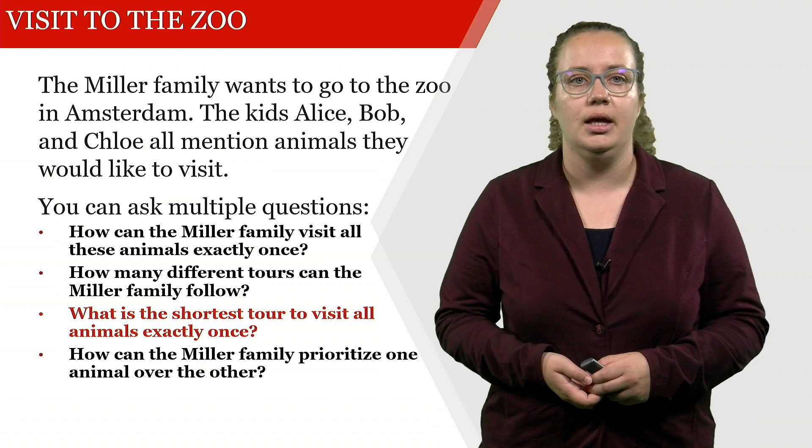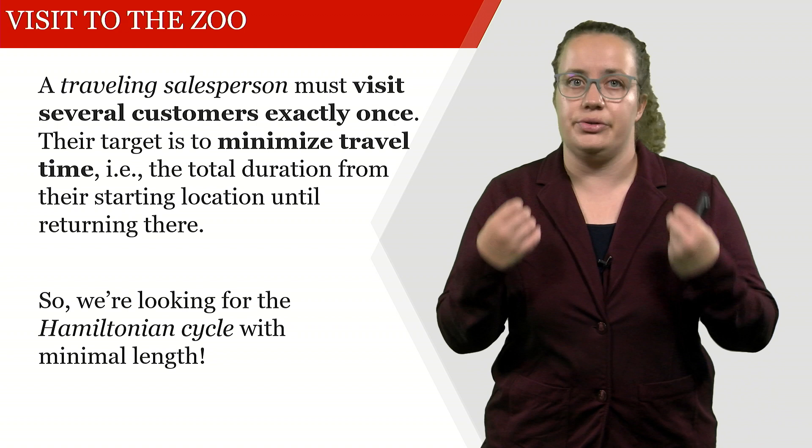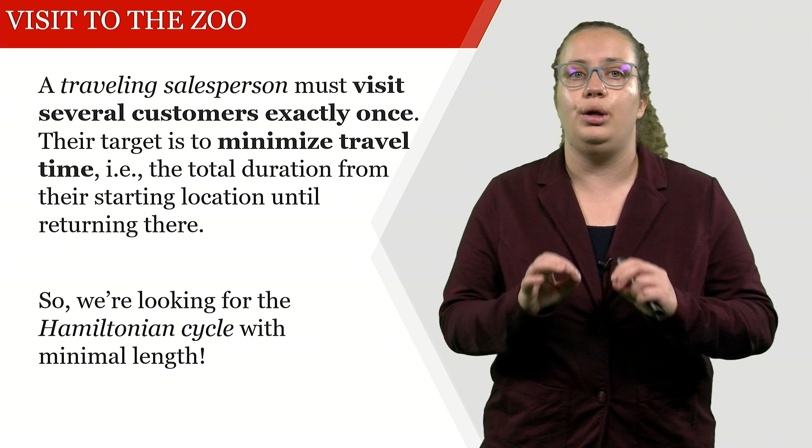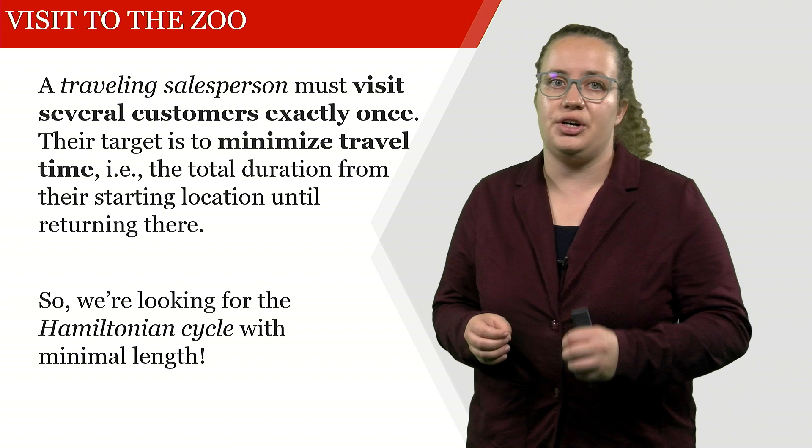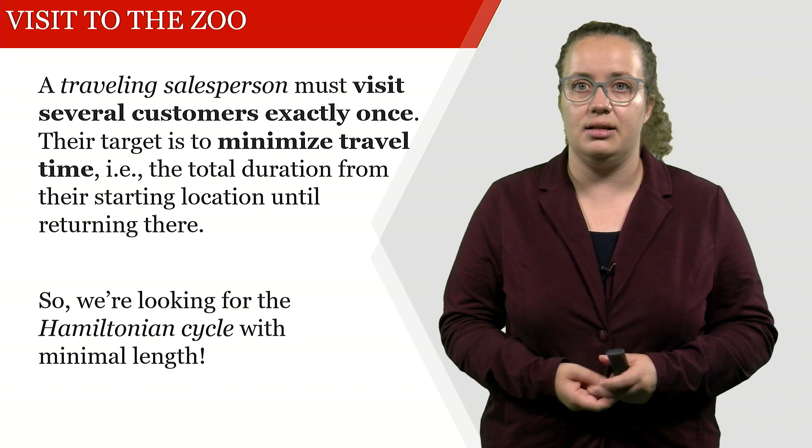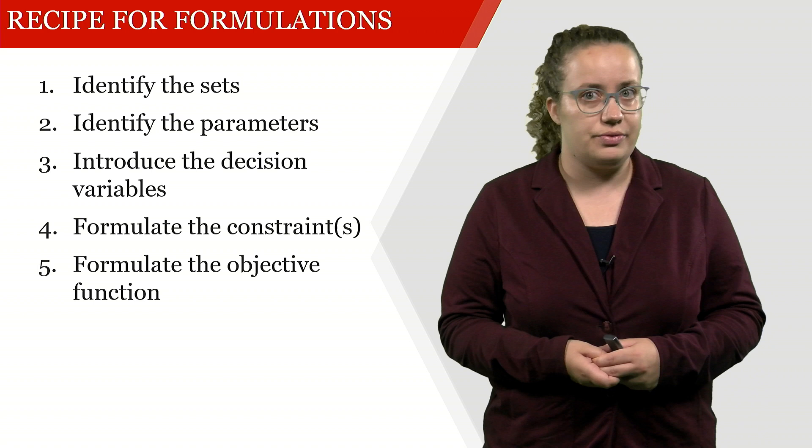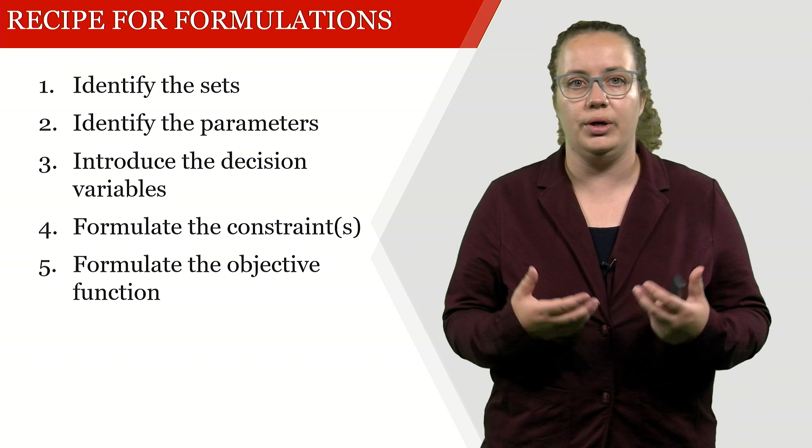So what we're trying to do is mathematically model the so-called travelling salesperson problem. The TSP has to visit all customers exactly once while minimising travel time or travel distance or travel costs. That is the total duration from start location until returning there. As such, we're looking for a Hamiltonian cycle with minimum length. We're going to look into the recipe for formulations and then develop the mathematical formulation for this TSP using the Danzig-Falkerson-Johnson formulation.